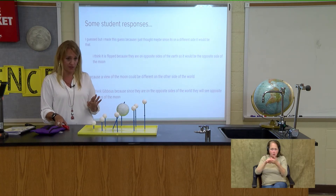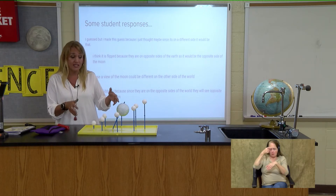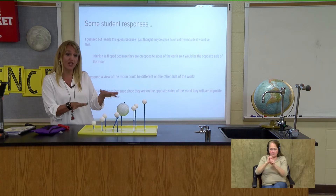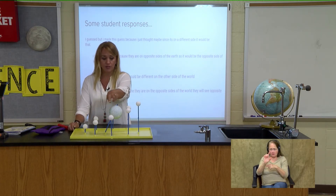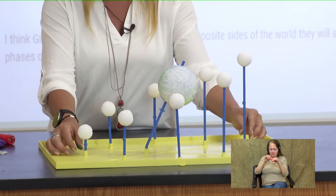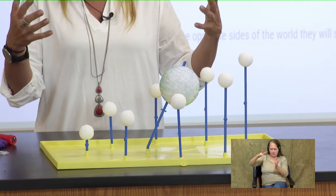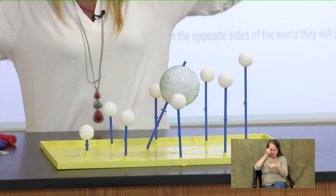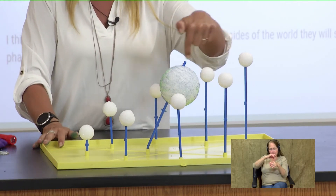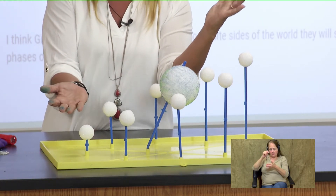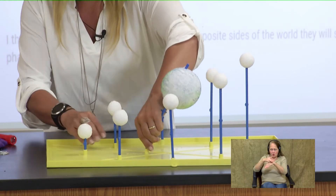I want you to notice a couple of things about this model. Remember this standard is all about modeling the sun, Earth, and the moon system, and in order for us to see causation, we have to make sure we have everything in the model correct. Notice first that in this model, the moons are all different heights. The reason they're on different length pegs is to represent the actual tilt of the orbit. When we're talking about space, we have to get out of our heads that everything is linear and lined up perfectly straight — stuff is at all kinds of angles. We have the tilt of the Earth at twenty-three and a half degrees, and then the plane of the orbit of the moon is also tilted. I'm going to remove the Earth from the center so it doesn't get in the way of our model.